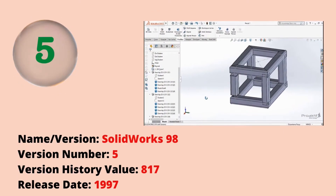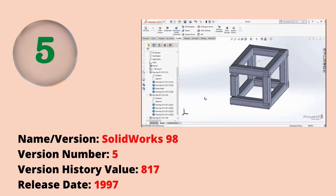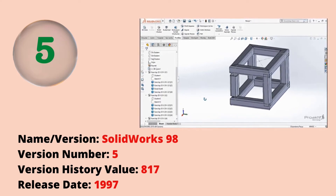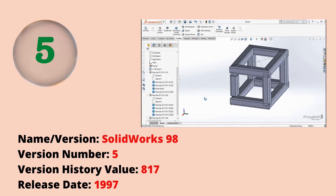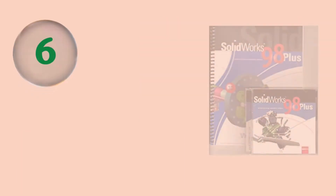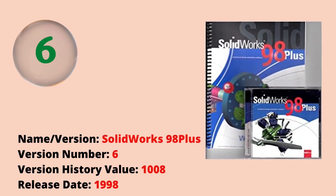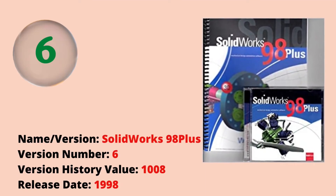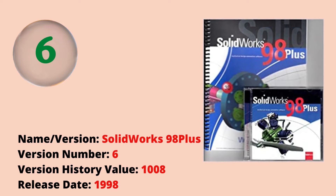The fifth version was SOLIDWORKS 98 with a version history value of 817. The release date was also 1997. The sixth version was SOLIDWORKS 98 Plus with a version history value of 1008. The release date was 1998.